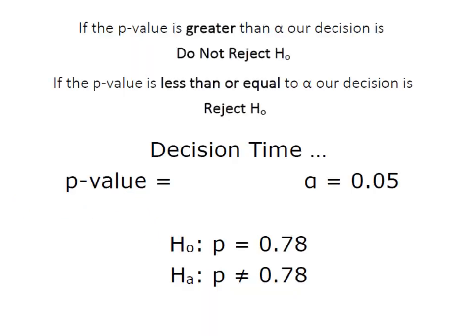Remember that our decision is made under the p-value approach. When the p-value is greater than alpha, our decision is do not reject H0. When the p-value is less than or equal to alpha, our decision is to reject H0. The calculated p-value that Minitab gave us was 0.264.